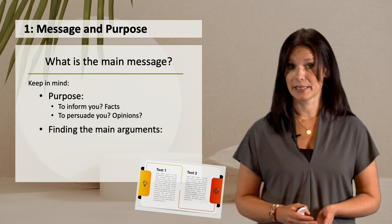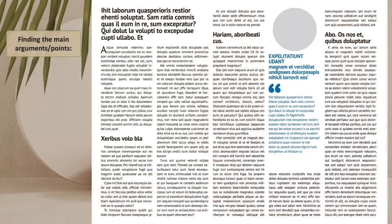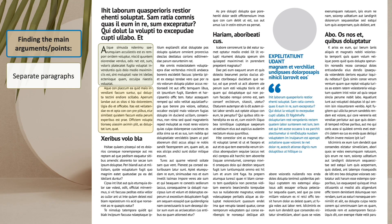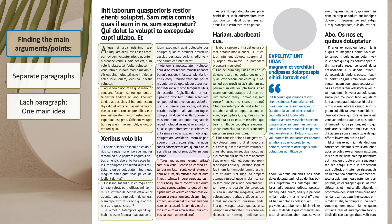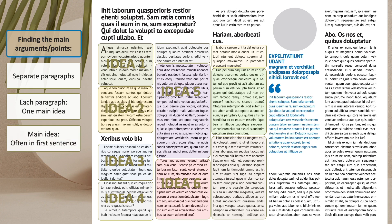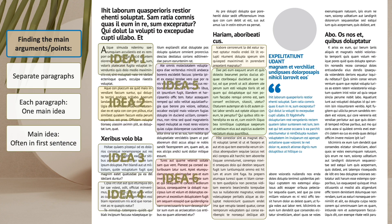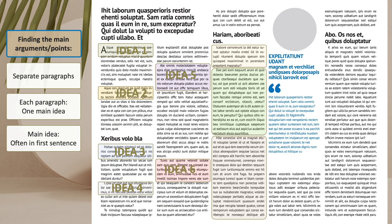When it comes to finding the main arguments of the text — the main points — a helpful thing is to understand that a good writer often writes with separate paragraphs, and that each paragraph contains a main idea or a main topic. And if the author is really good, this argument, this main idea, will often be placed in the first sentence of the paragraph. This is good news for us, because sometimes we can run through an article or a text and find the main arguments or ideas in the first sentence of each paragraph.